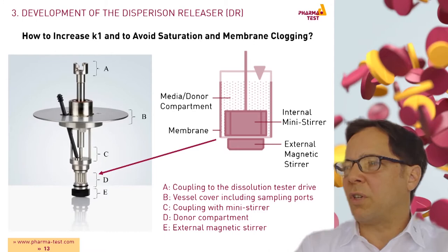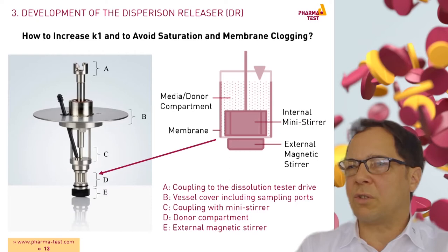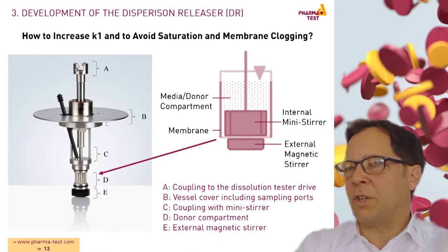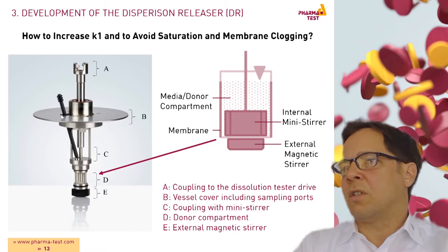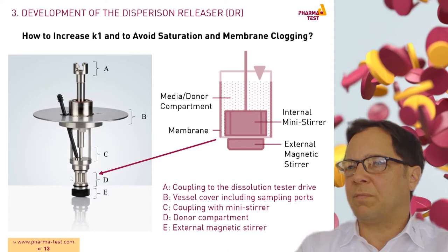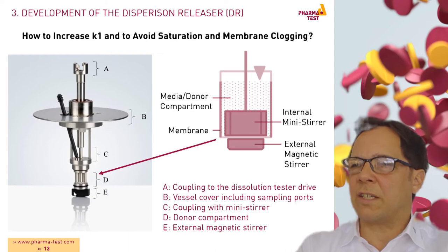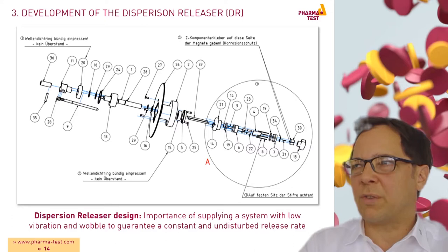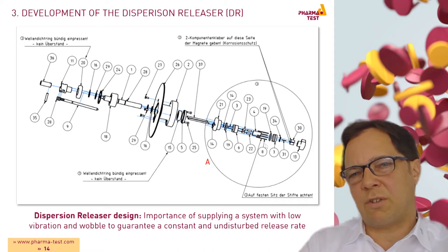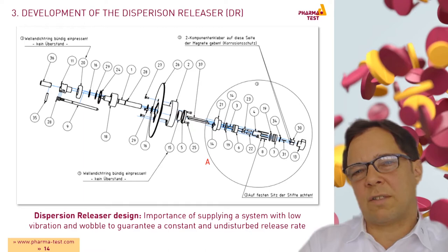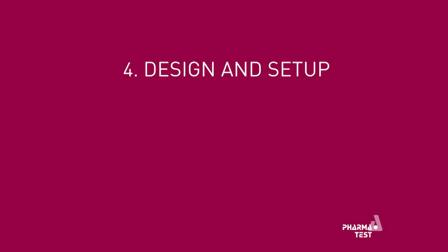The dispersion releaser consists of a coupling device which is used to connect the dispersion releaser to the dissolution tester. B is the vessel cover including the sampling ports. C is another coupling with the mini stirrer. D is the donor compartment which is typically surrounded by a membrane. E is the external magnetic stirrer. The next picture shows a graphic of the construction. We have several bearings which are necessary to build a system with low vibration and low wobble. Here we see the magnetic stirrer, then the internal stirrer which is in the donor compartment. All parts need to be constructed in a very precise way to avoid vibration and wobble.